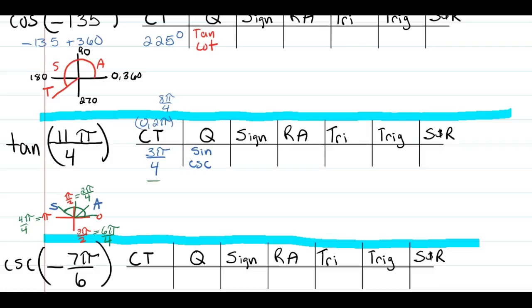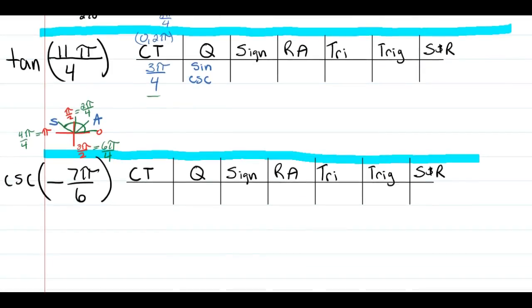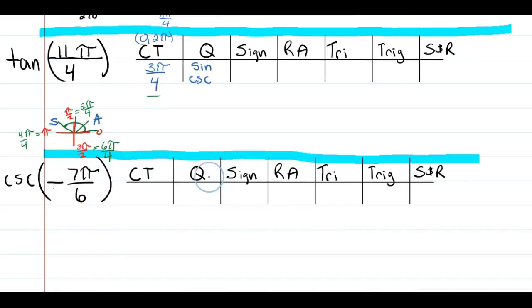Go ahead and try the fourth one with negative 7π/6. Find which quadrant it lies in and which trig functions are going to be positive in that quadrant. That is your next question below.